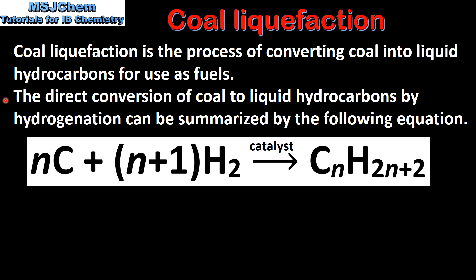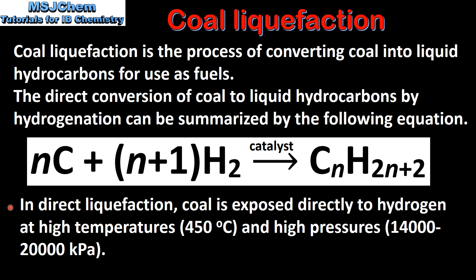The direct conversion of coal to liquid hydrocarbons by hydrogenation can be summarized by the following equation. In direct liquefaction, coal is exposed directly to hydrogen at high temperatures and high pressures.